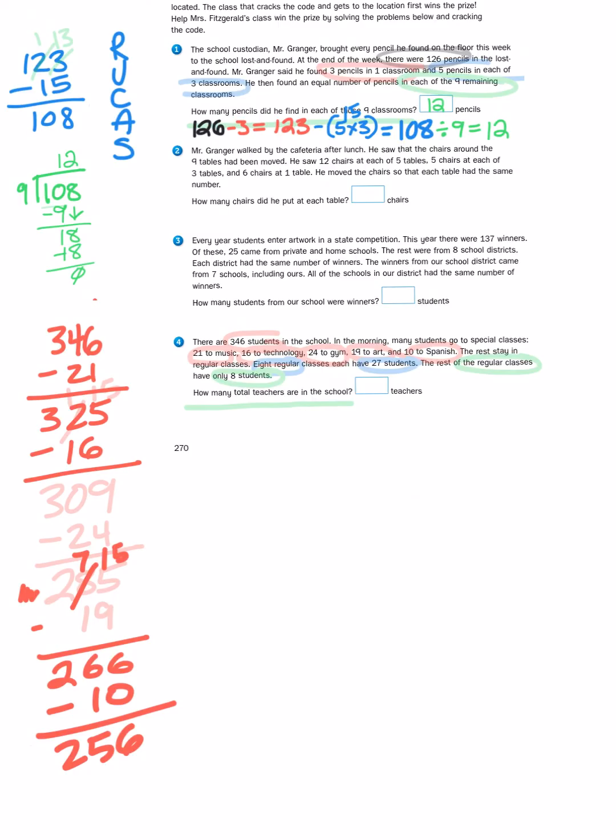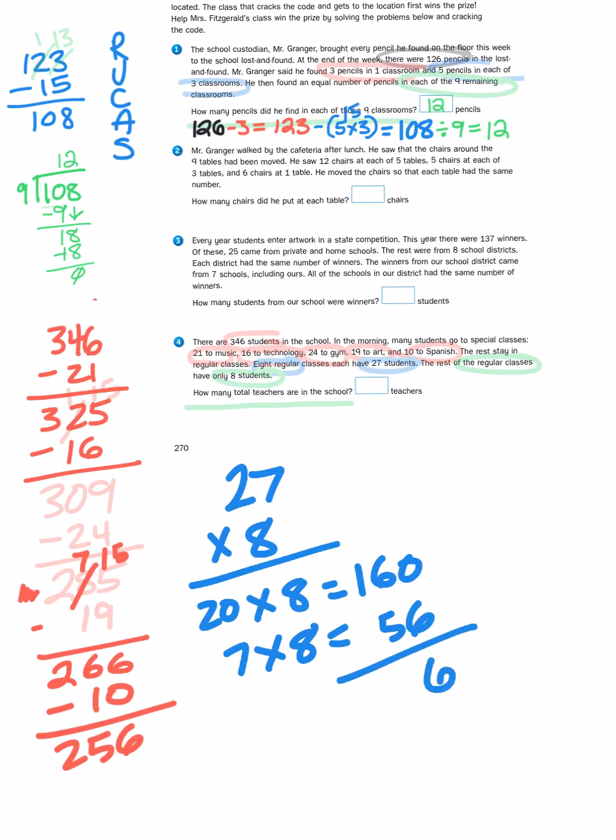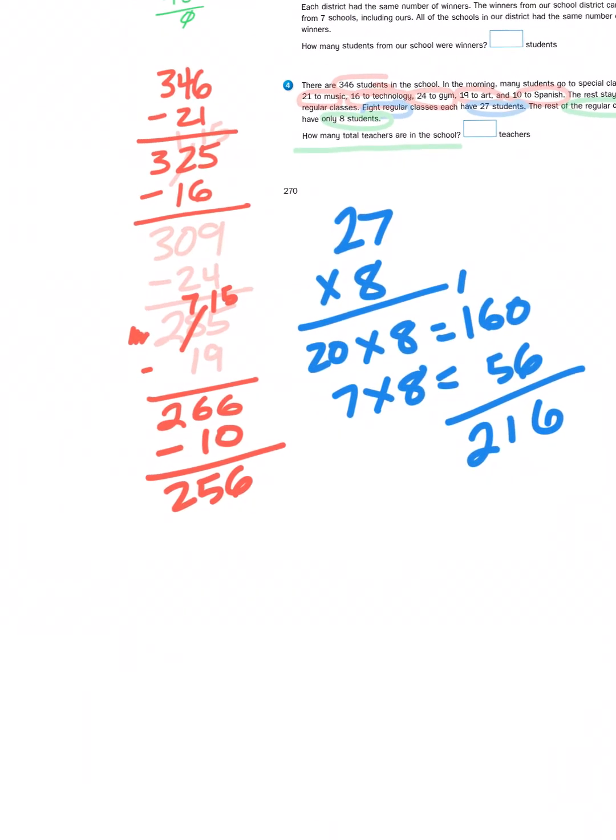Now that I know where some of the students go to their special area classes, I need to figure out where the rest of the students go for their regular classes. Eight regular classes each have 27 students, so I need to multiply 27 times 8 using partial products. I'm going to multiply 20 times 8, then 7 times 8, and add those products together. That gives me a total of 216. I need to subtract 256 minus 216, which leaves me a difference of 40.